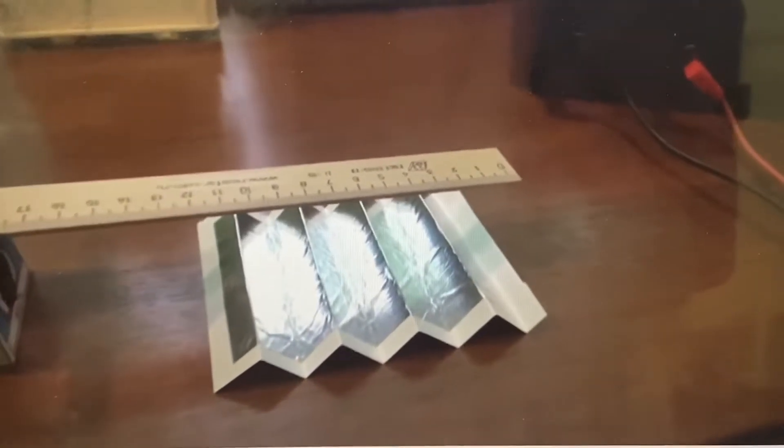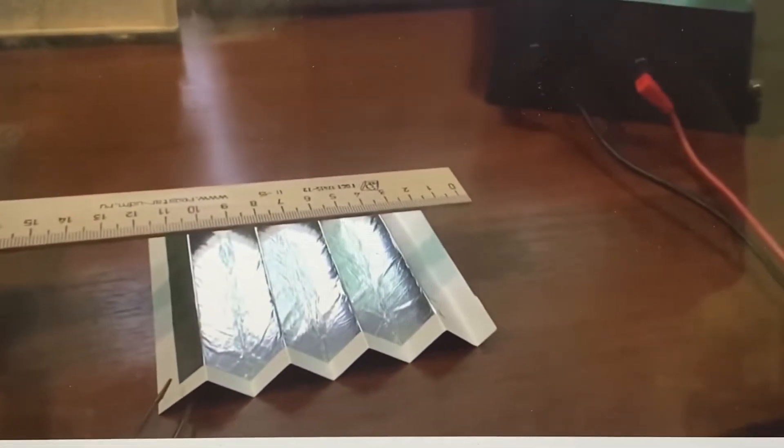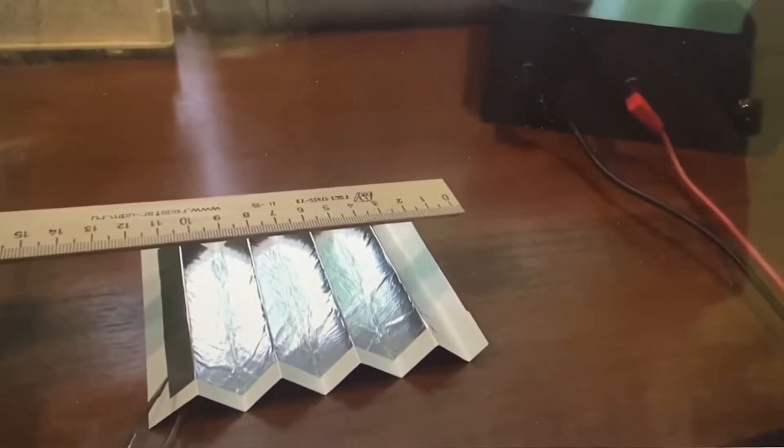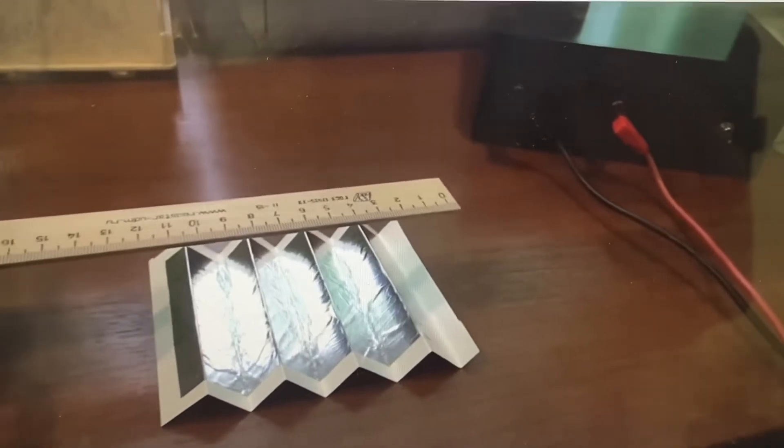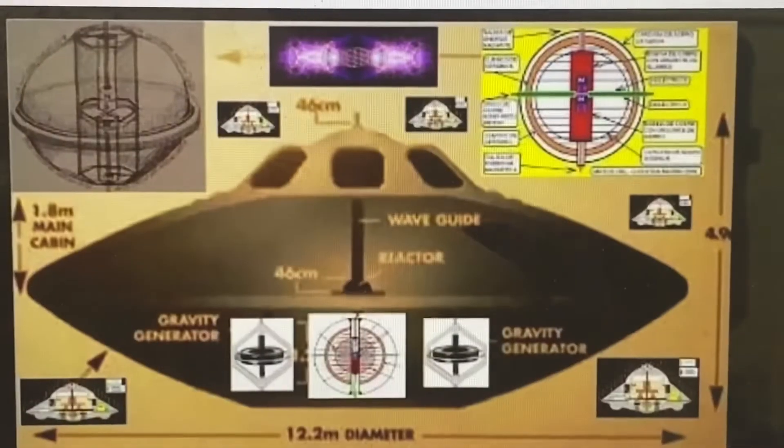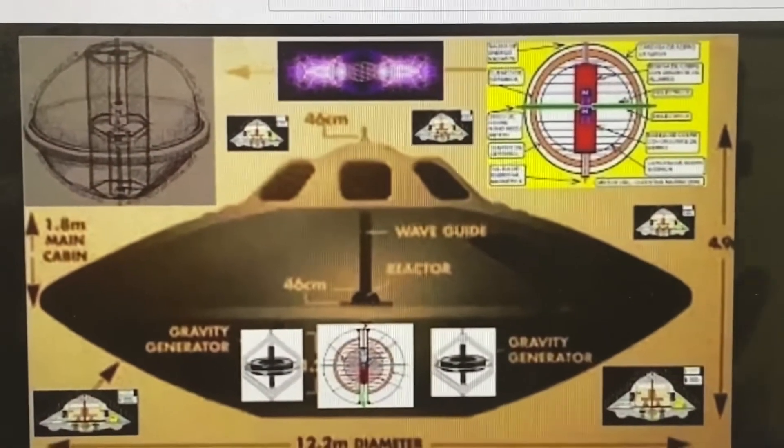So, this capacitor is already charged, and as he discharges it with those tweezers, we see a deflection upwards, apparently, as he claims, caused by the wavy design creating a gravitational shielding effect that the ruler experiences.